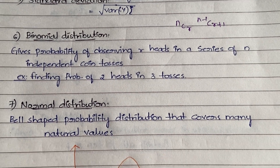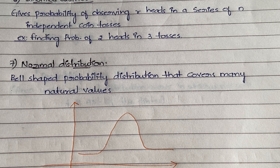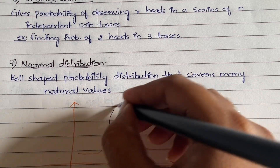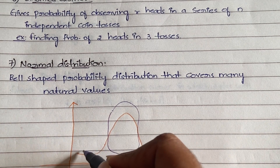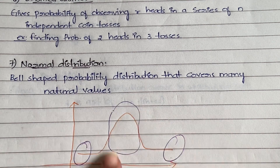The seventh definition is normal distribution. You need to remember the bell curve — a bell-shaped probability distribution that covers many natural values. When you plot all the values, this bell shape covers most of them. Most commonly occurring values are placed at the center part, while values occurring least commonly appear at the two ends.